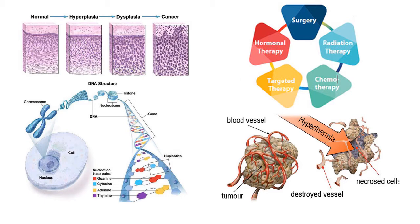Some people with cancer will have only one treatment, but most people have a combination of treatments such as surgery with chemotherapy or radiation therapy. Common treatments include surgery, where the surgeon removes the cancer from the patient's body. Radiation therapy uses a high dose of radiation to kill the cancer cells. Another is chemotherapy, where drugs are used to kill the cancer cells.